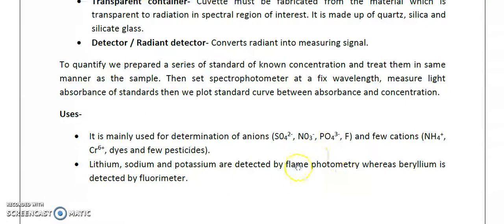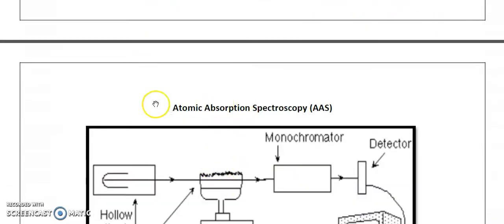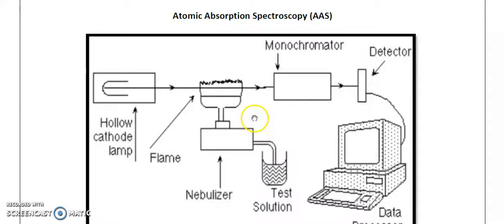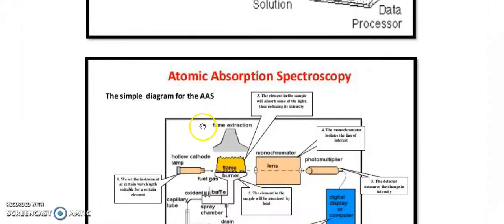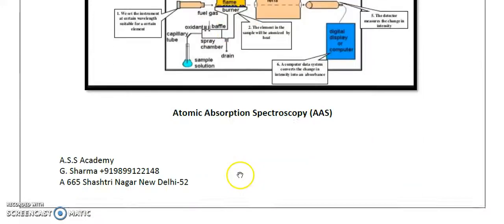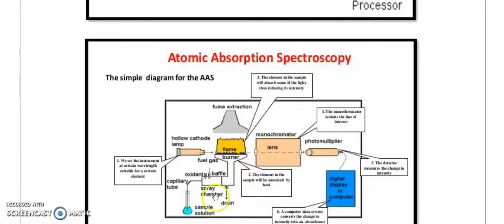Atomic absorption spectroscopy (AAS) uses a holocathode lamp containing argon as an inert gas inside the tube, then a burner with a flame containing atomic vapor. AAS can be of two varieties: flame AAS or graphite furnace AAS, depending on the source of atomization — either a flame using some fuel or a graphite furnace tube.